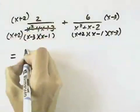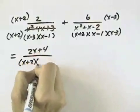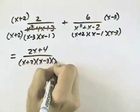So the first fraction, multiplying the 2, gives us 2x plus 4 over our common denominator of x plus 2, x minus 3, and x minus 1.